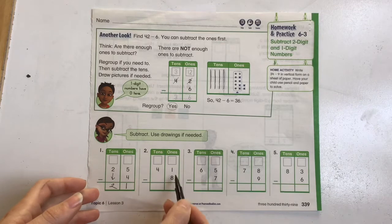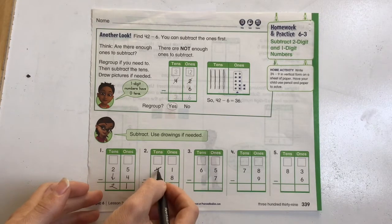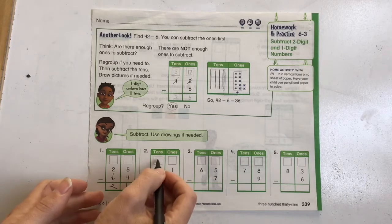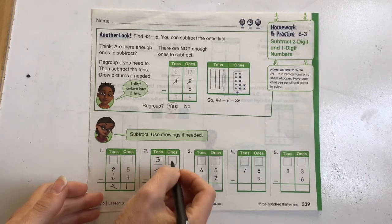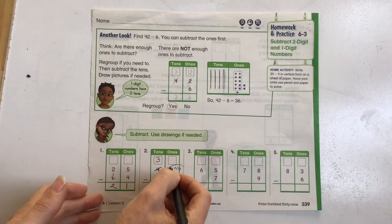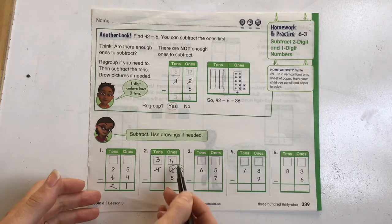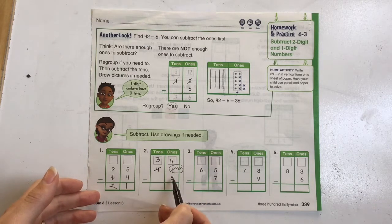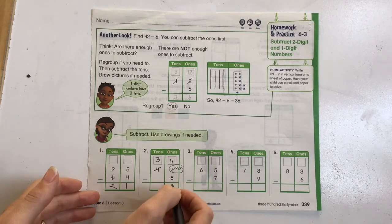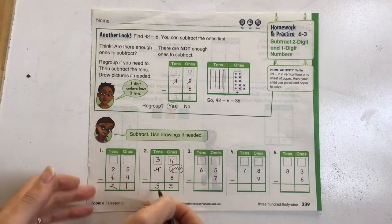So we've got 1 minus 8, that won't work. So we will need to take a group of 10 over here. 4 minus one group of 10 is 3. And then we're going to add 10 over here. So we've got 1 plus 10 becomes 11. And then we can subtract down. 11 minus 8 is 3, and we're just going to drop our 3 straight down from there.